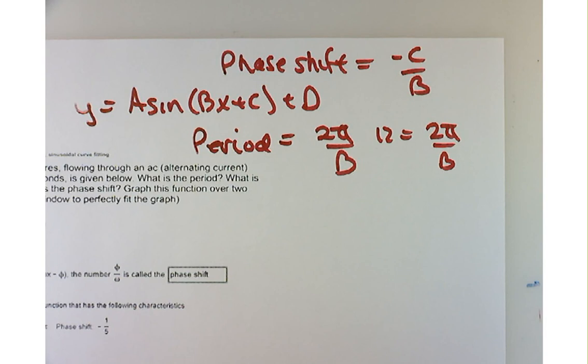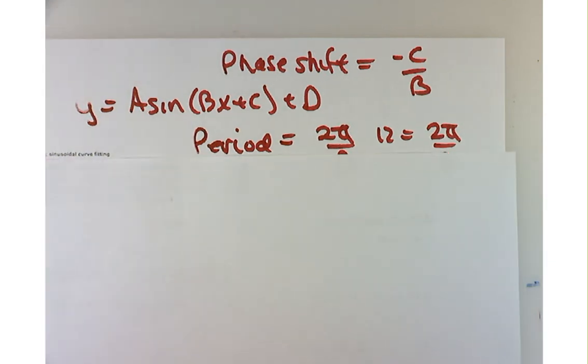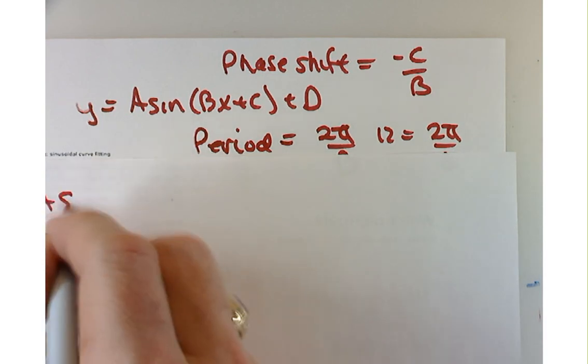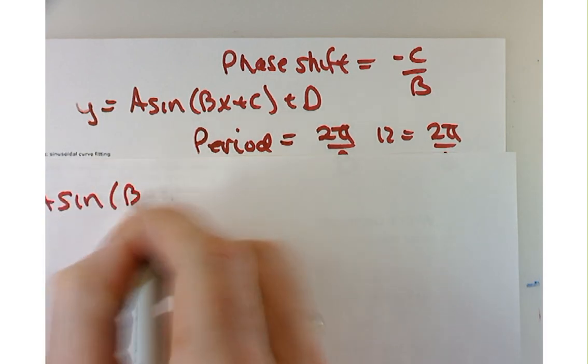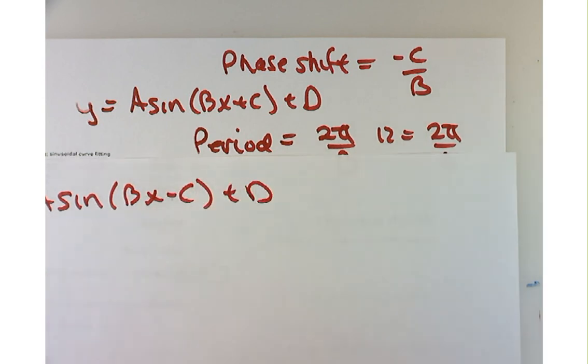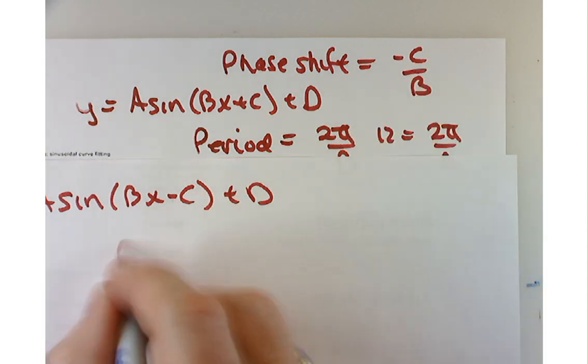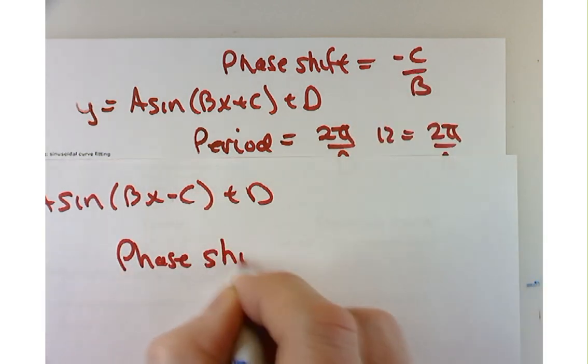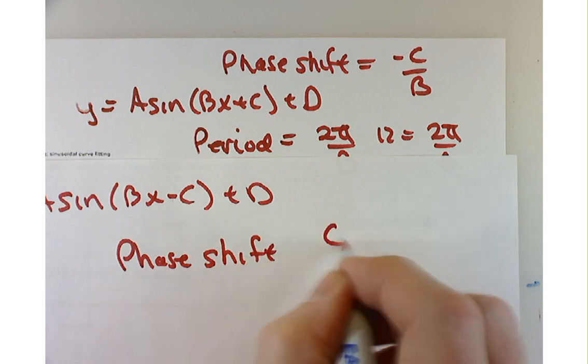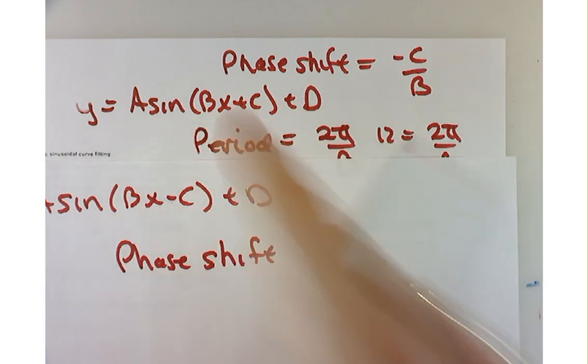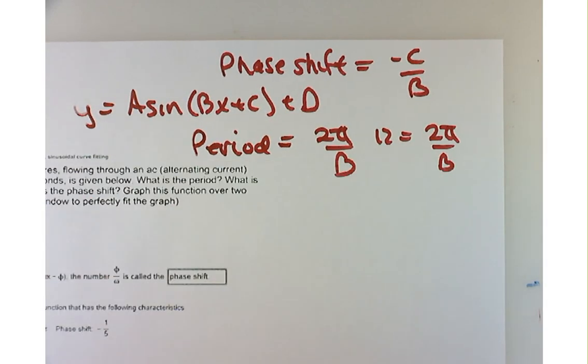Our phase shift is going to equal negative C over B. I'll give you a little heads up: different authors or different websites might do things a little bit different. They might write their functions as y equals a sine of bx minus C plus D. And if you have a minus here, you're not going to have a minus here. The phase shift here would be simply C over B. I like a plus here. It just feels more user-friendly.